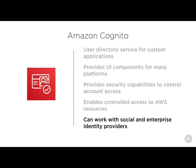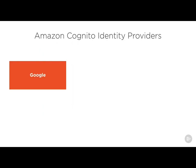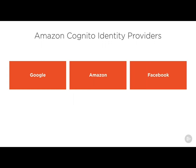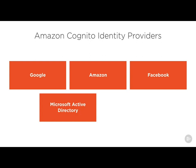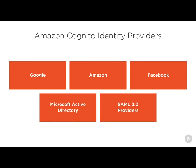This can also work with social and enterprise identity providers. Cognito has wide support for identity federation — with providers like Google, and most people have a Google account, so you could let your users log in to your custom application with Google and have that correspond to a Cognito identity. It also supports Amazon, Facebook, Microsoft Active Directory, and any SAML 2.0 provider, giving you the ability to tie this level of authentication and authorization into your custom applications.